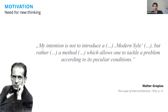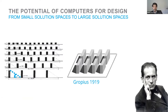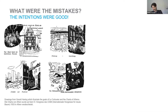Gropius once said that his intention was not to invent a kind of modern style — what we know as Bauhaus or modernist style — but to come up with a method to tackle a problem accordingly. Based on this idea, what he did 100 years ago, he came up with a very basic parametric urban model system that you can see in the background.